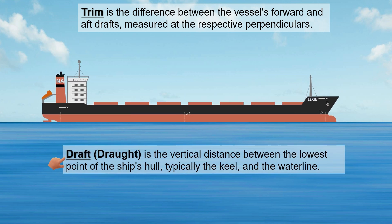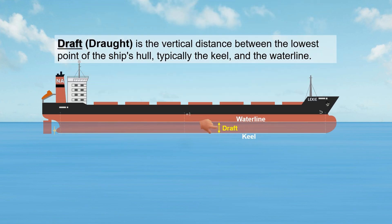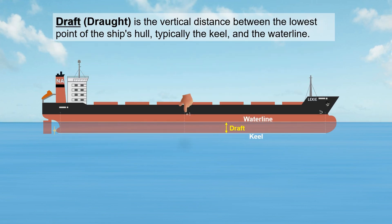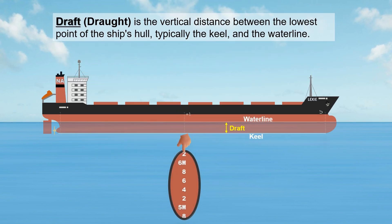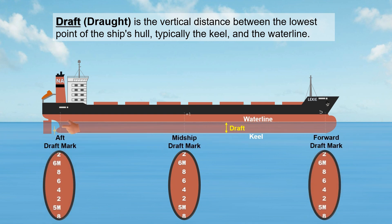A ship's draft (also spelled draught) is the vertical distance between the lowest point of the ship's hull, typically the keel, and the waterline. A ship's draft is determined by observing the draft marks — a numerical marking normally positioned at the forward, middle, and aft sections of the ship's hull.